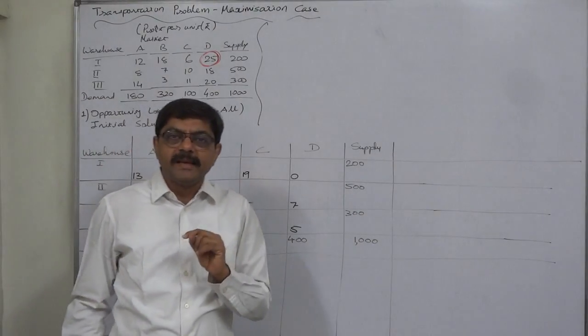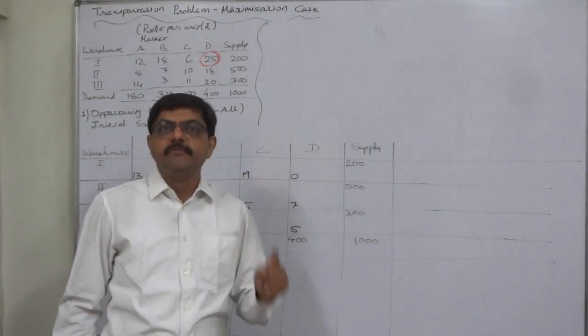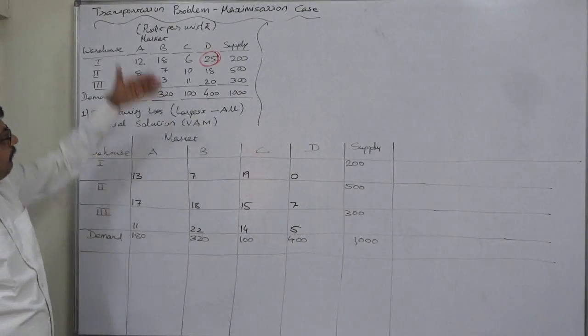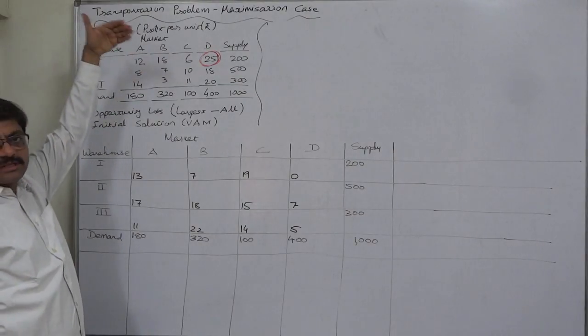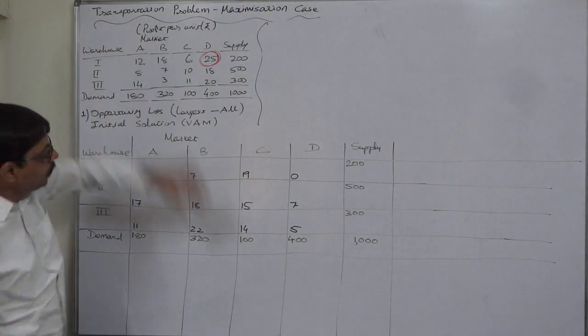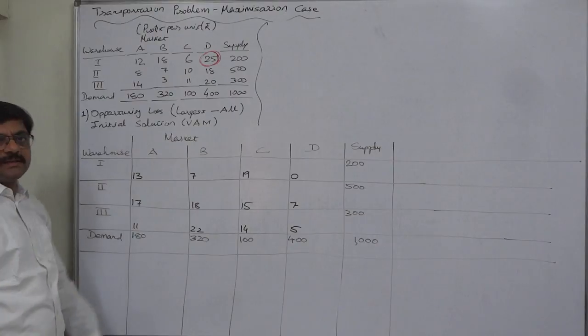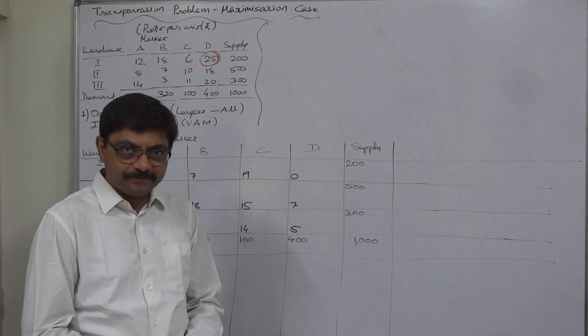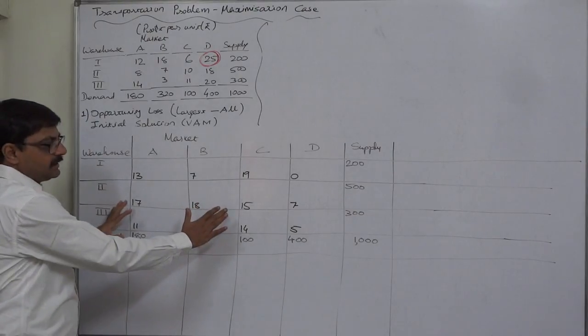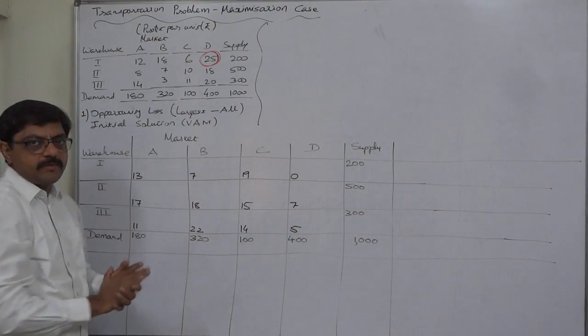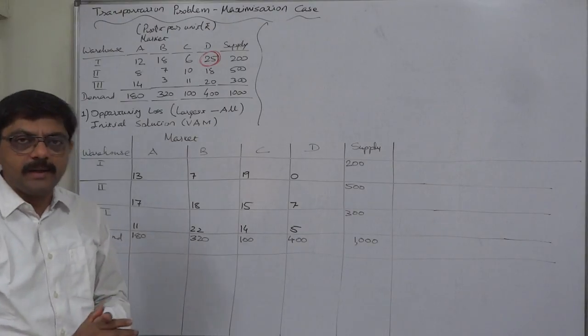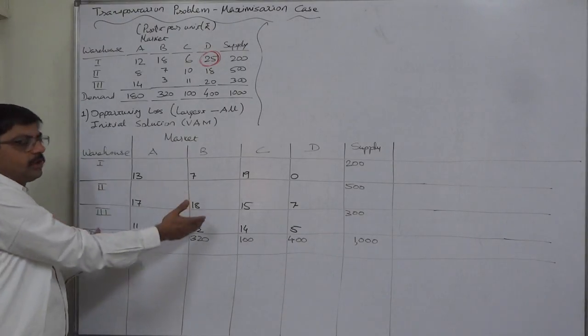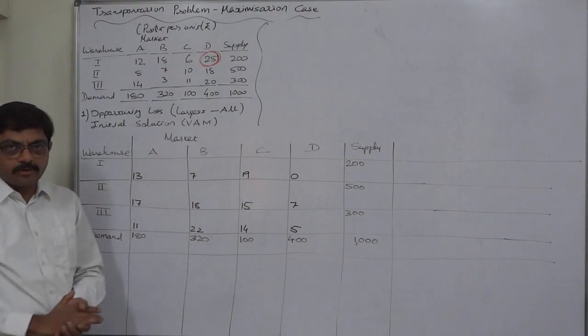So if we convert the profit or sales or revenue matrix into opportunity loss matrix, the problem becomes a problem of minimization. So now, in this table, this is the transportation problem with minimization objective. And now we can solve this through our Vogel's approximation method.